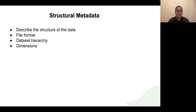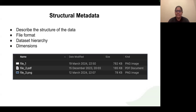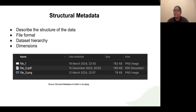The other type is structural metadata. As the name suggests, structural metadata describes the structure of data. For example, the image shows structural metadata of a folder on a laptop: the names of files (file 1, file 2, file 3), when they were created, when they were modified, the size of each file, and the file format — PNG, PDF, and so on. This kind of metadata gives information about the structure of the data, file format, dimensions, and hierarchy in the dataset.